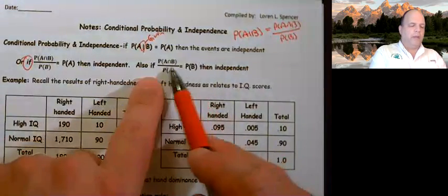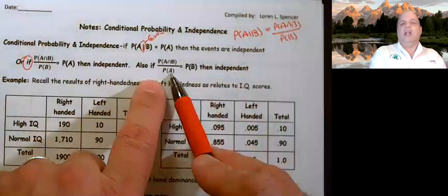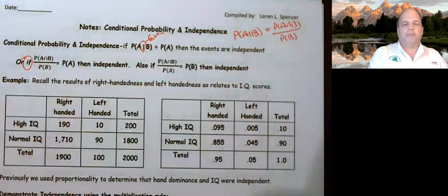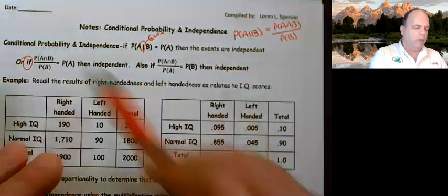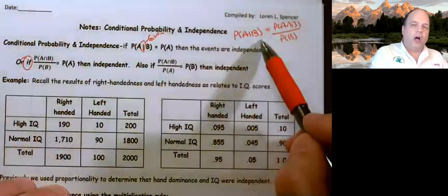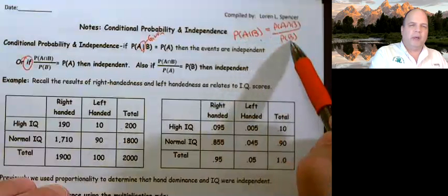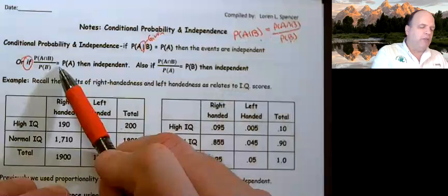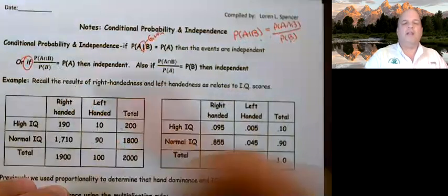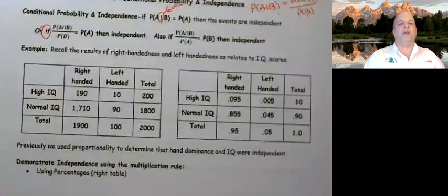Obviously, we can swap A and B and also be independent. So please remember: this formula is always true — A given B always equals the intersection divided by B. But if it happens to equal A, then the events are independent.